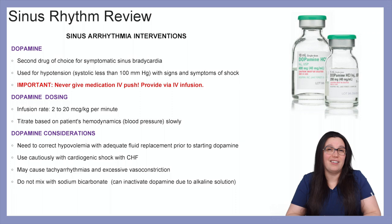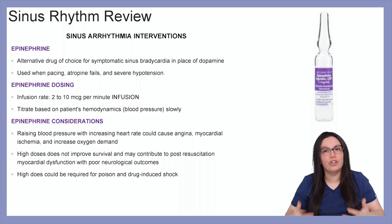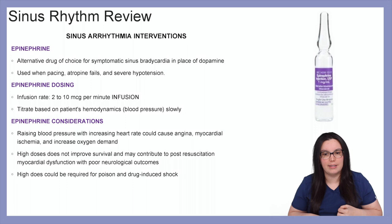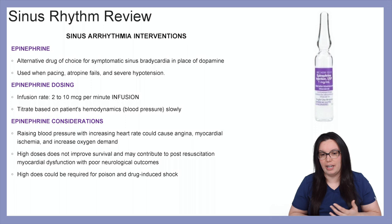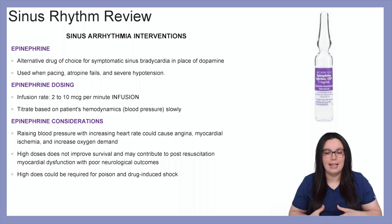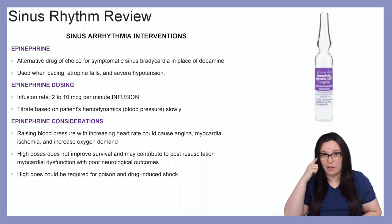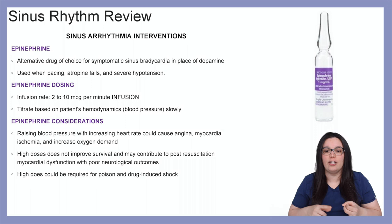Lastly, epinephrine is an alternative drug of choice for symptomatic sinus bradycardia in place of dopamine when dopamine is contraindicated. We use this when we're pacing the patient, atropine fails, and we're starting to have severe hypotension. Dosing is 2 to 10 micrograms per minute, titrated slowly based on the patient's hemodynamics. Considerations: rising blood pressure with increasing heart rate could cause angina, myocardial ischemia, and an increase in oxygen demand, so we have to monitor these patients very closely. High doses do not improve survival rates and may contribute to post-resuscitation myocardial dysfunction with poor neurological outcomes. If a patient has been poisoned or is in drug-induced shock, higher doses may be necessary.